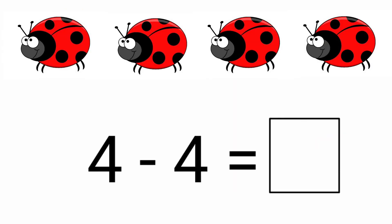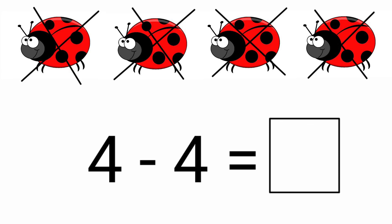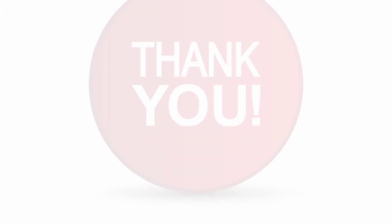Look at the next picture. How many beetles are there? There are 4 beetles. The given question is 4 minus 4 equals. When we subtract the same number, the answer is 0. So the answer is 0. 4 minus 4 equals 0. I hope you all understand the concept of subtraction. See you in the next session. Thank you, children.